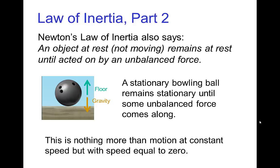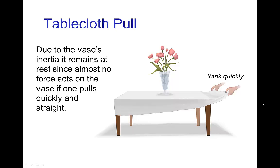If you think about it, this is really just a special case of what we saw in Part 1, because this is just uniform motion when the speed happens to be zero. But it's important enough that it's worth pointing out as a special case that occurs very often. Now, the classic example of the Law of Inertia for an object at rest remaining at rest is the tablecloth pull.